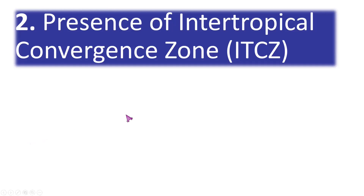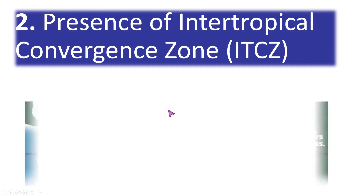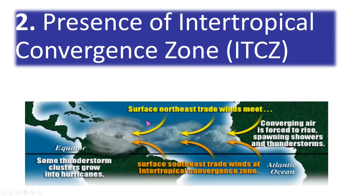Condition 2: the presence of the Intertropical Convergence Zone, also known as the ITCZ. Near the equator, at about 5 to 30 degrees latitude, you will see winds moving in different directions converging toward each other.